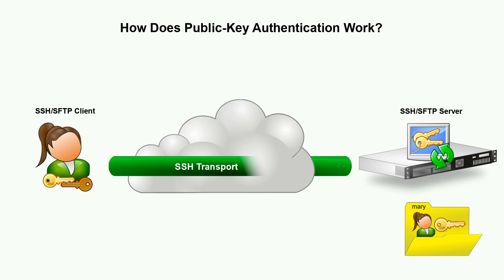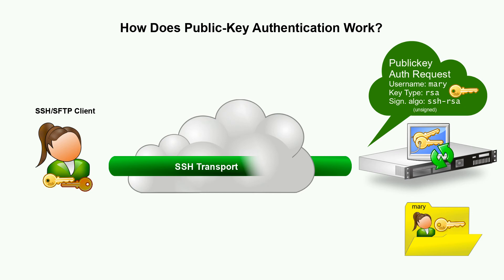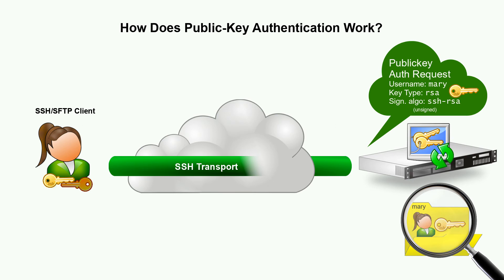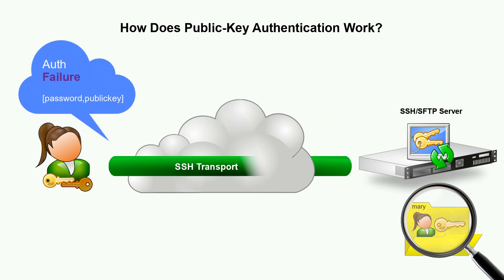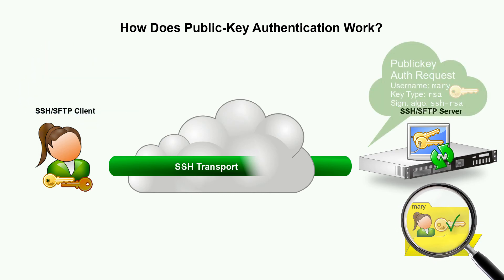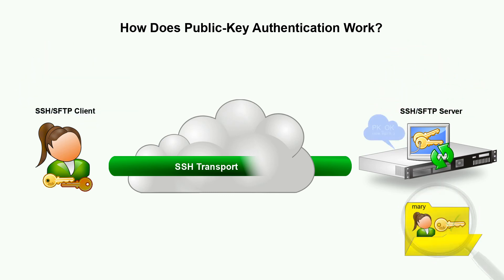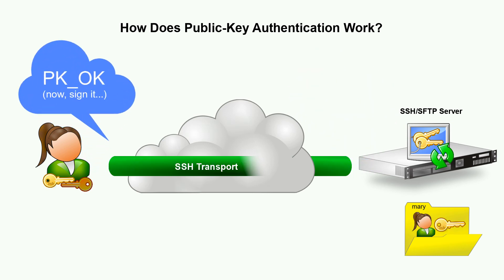Usually, this first Public Key authentication request is unsigned — it does not include a signature of the data computed with the client's private key. The server looks at the Public Key data and checks to see if it has a matching public key for the specified user account. If no matching key is found or if the signature algorithm isn't supported, the server sends a failure message. If a matching key is found and the algorithm is supported, the server replies with an OK message — akin to saying the key was found but wasn't signed, so the authentication attempt isn't complete.